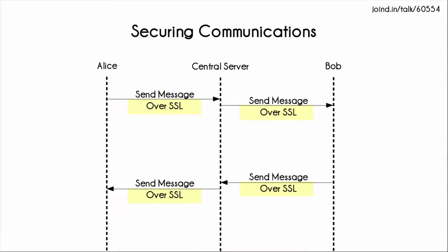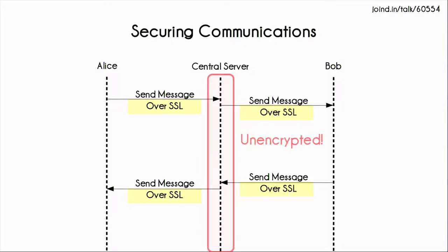What most people do nowadays is SSL. We're encrypting the data from the point of Alice to the server, and then from the server to Bob, and we've reduced the unencrypted space to just on the server. But looking at a national security world where we don't know who has access to these servers nowadays, that access is still plain text.